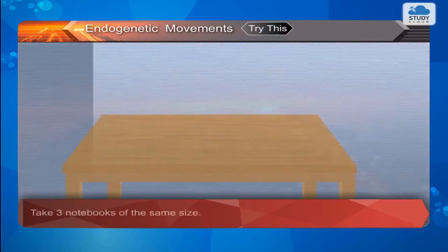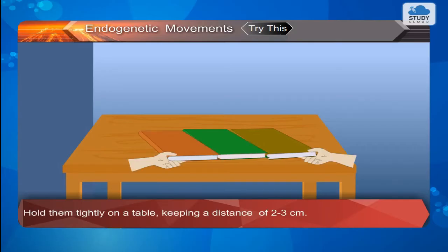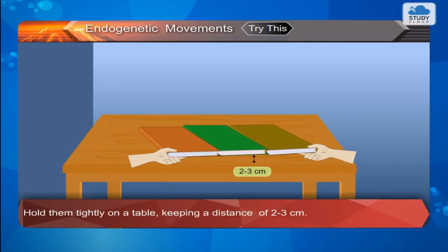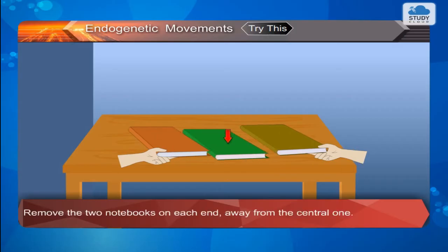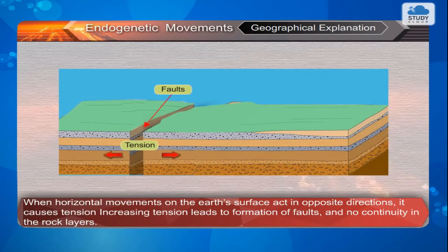Try this. Take three notebooks of the same size. Hold them tightly on a table, keeping a distance of 2–3 cm. Remove the two notebooks on each end away from the central one. Observe that the middle book subsides. Geographical explanation: When horizontal movements on the earth's surface act in opposite directions, it causes tension. Increasing tension leads to formation of faults and no continuity in the rock layers.